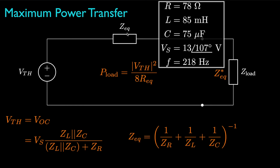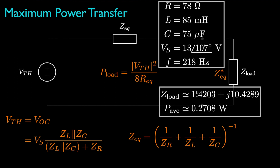As a numerical example, suppose the resistance is 78 ohms, the inductance is 85 millihenries, the capacitance is 75 microfarads, the source voltage is 13 volts at a phase of 107 degrees, and the operating frequency is 218 hertz. In this case, the load that maximizes power transfer would have an impedance of 1.4203 + j10.4289 ohms — that is, a resistance of 1.4203 ohms and a reactance of 10.4289 ohms. The average power associated with that load would be 0.2708 watts. You should take the time to verify that you get these same values.